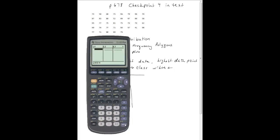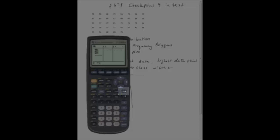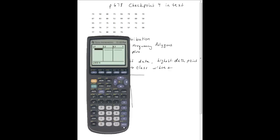What I want to do in L1, that is my list one, I'm going to put all my data points in there. If there was already data in here, you go all the way up to where it says L1, hit the clear button, and then enter, and it clears everything out of the column.